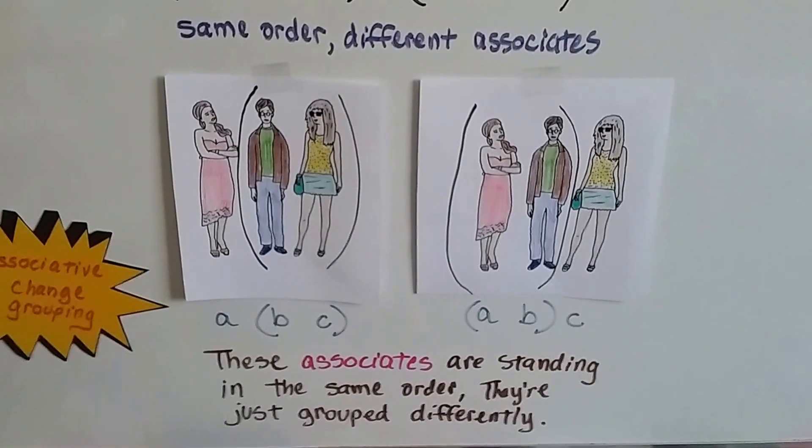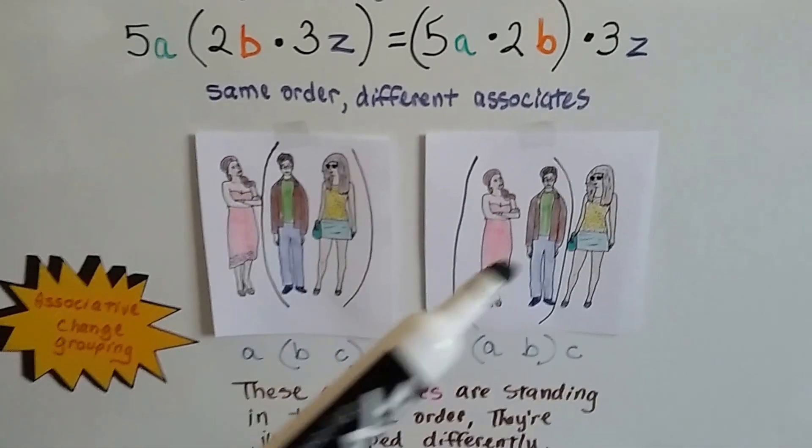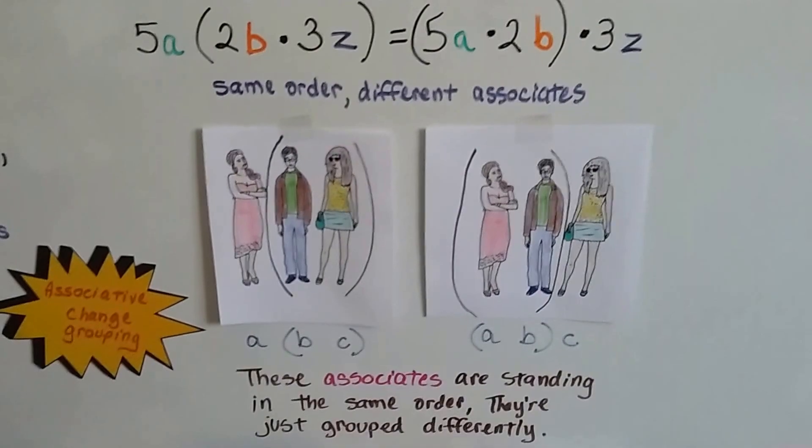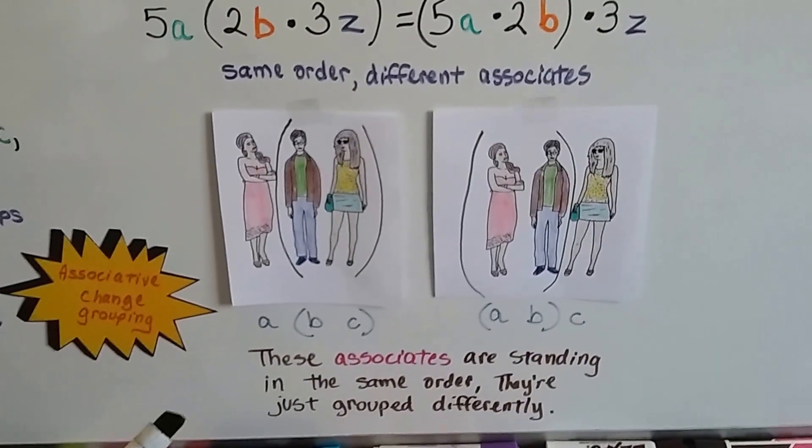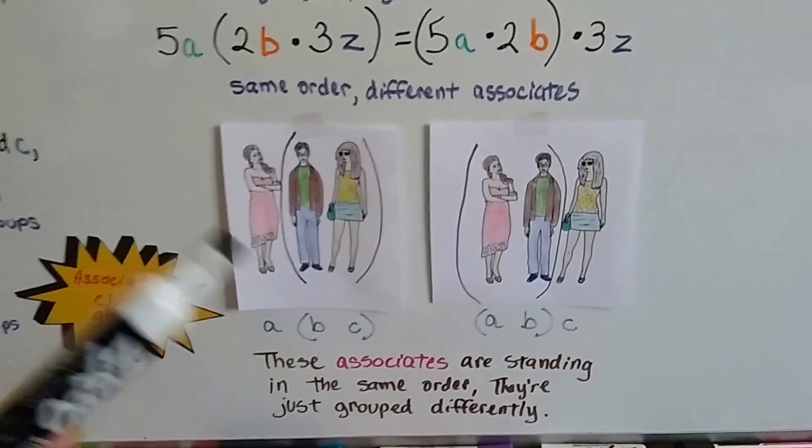She doesn't look too happy, does she? She's like, what are you doing with my guy? So just remember, it's who you associate with for associative. These associates are standing in the same order. They're just grouped differently.